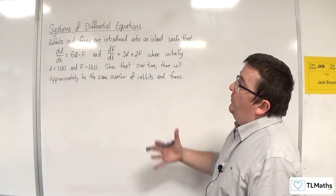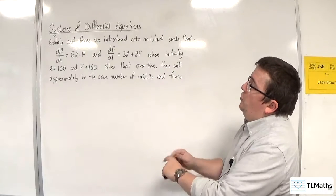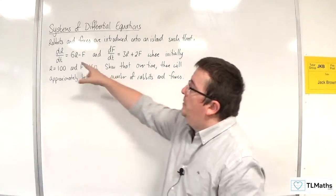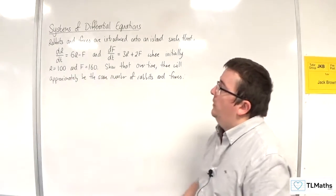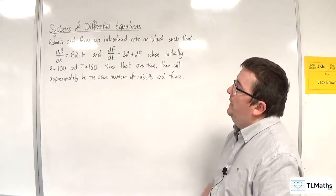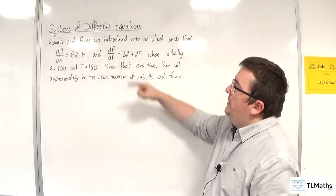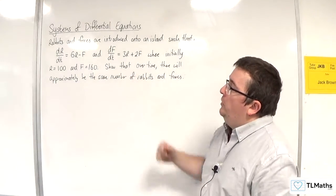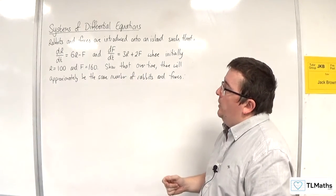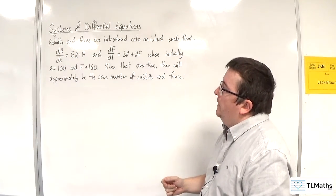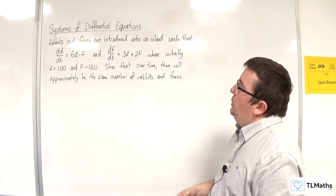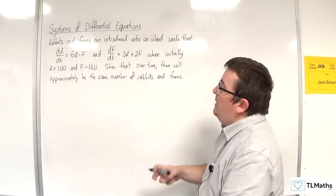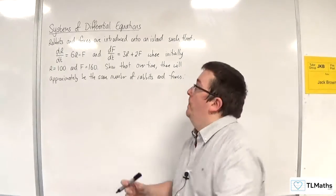In this video, rabbits and foxes are introduced onto an island such that dr/dt = 6r - f, and df/dt = 3r + 2f, where initially r = 100 and f = 160. Show that over time there will approximately be the same number of rabbits and foxes.